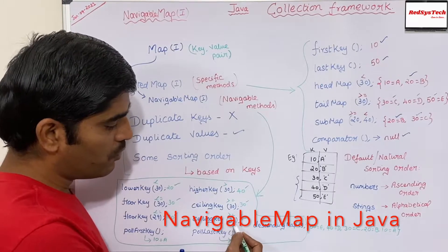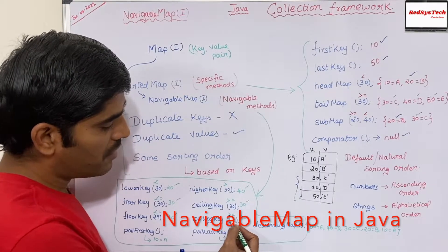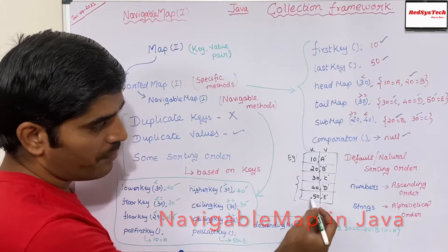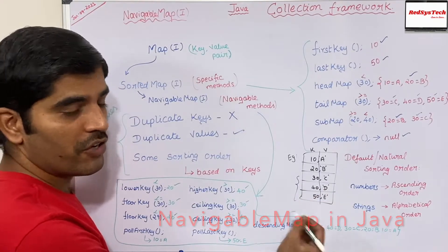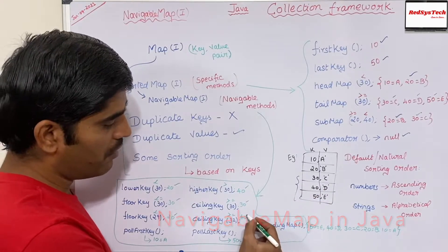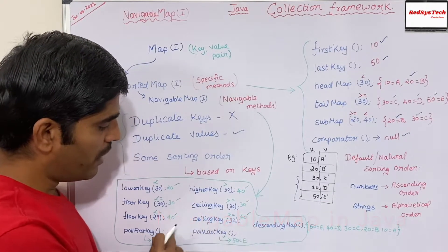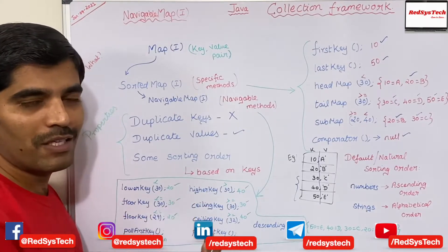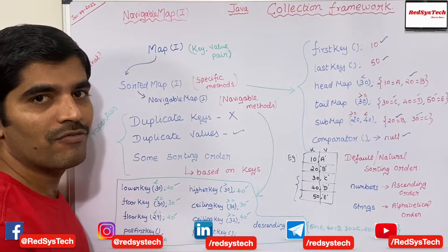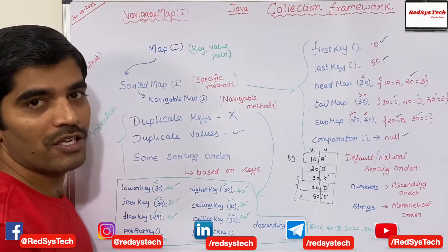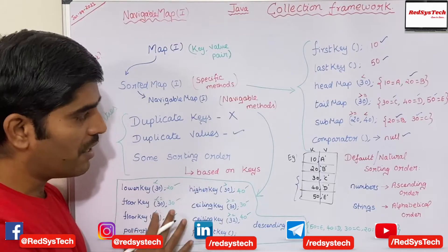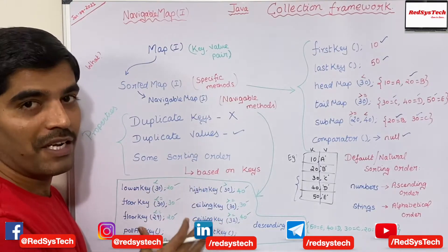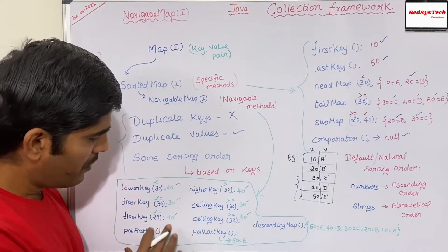higherKey(30) means greater than 30 — the first immediate key after 30 is 40. ceilingKey(30) means greater than or equal to 30; since 30 exists, it returns 30. ceilingKey(32) — since 32 doesn't exist, the next immediate higher value is 40, so it returns 40. These are the navigable methods that let you navigate precisely between key-value pair objects in the collection.